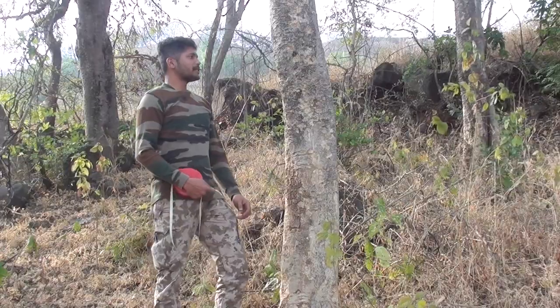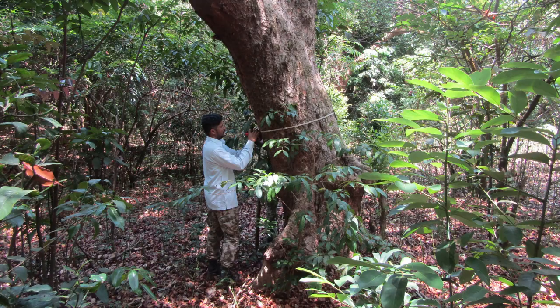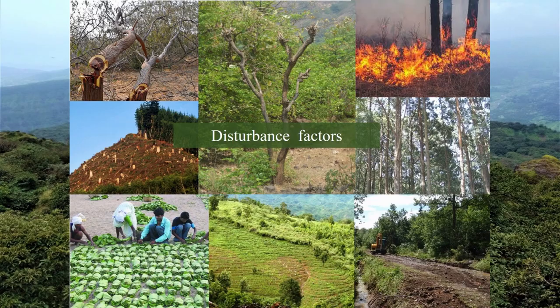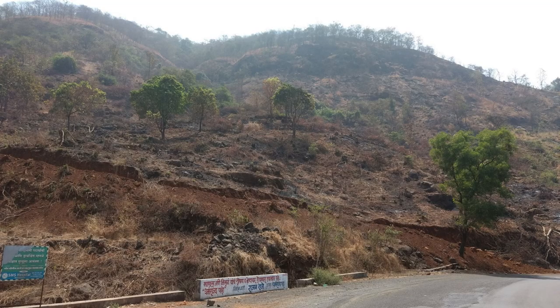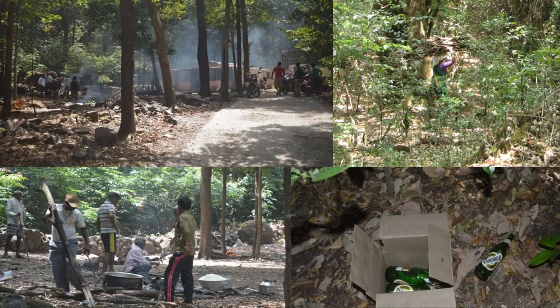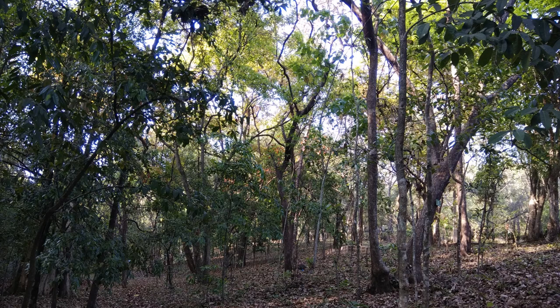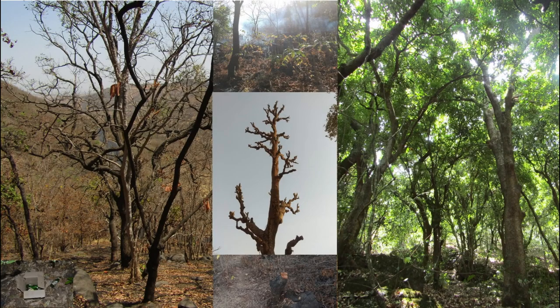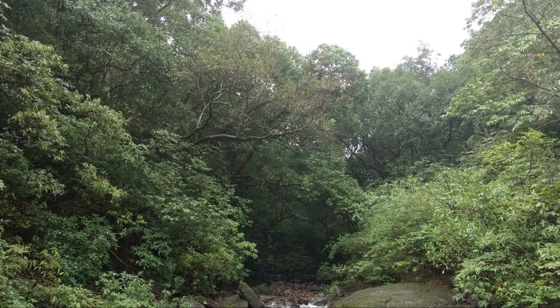We also measure the girth of trees. Additionally, we are documenting the presence of various disturbances such as cutting, lopping, road construction, building construction, direct human presence, grazing, and non-native tree plantation. Each disturbance is graded on a scale from 0 to 5. The disturbance score will be converted into a combined disturbance index, which will be used to check the correlation between disturbance and diversity.